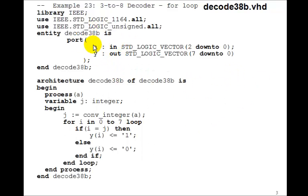Here's the entity. a is 2 downto 0, y is 7 downto 0, like we had before. In the process, we have process(a), the input a. We'll define a variable j to be an integer.